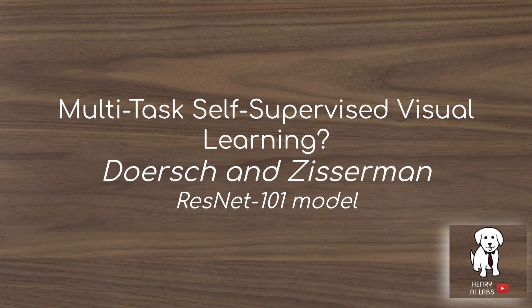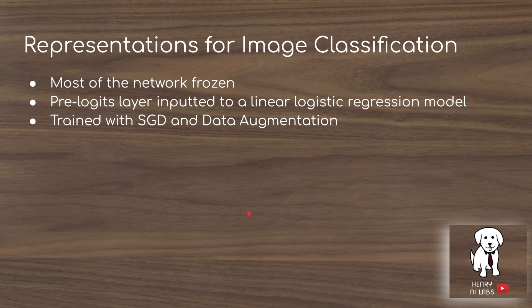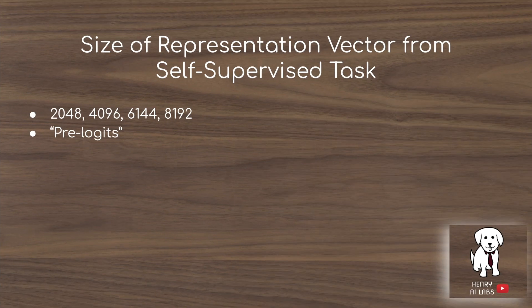That multi-task study tests their approach using the ResNet 101 model. For representations used in image classification, most of the network is frozen and the pre-logit layer — an intermediate vector representation — is fed into a logistic regression classifier trained with SGD and data augmentation. The feature vector size extracted from the self-supervised learning task is varied across 2,048, 4,096, 6,144, and 8,192.